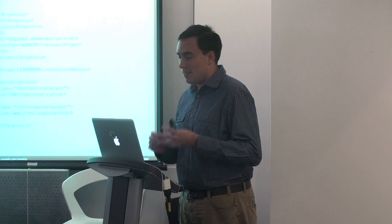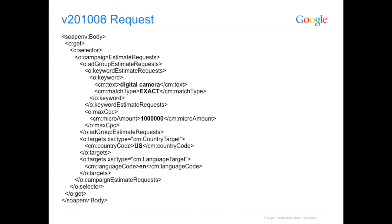How this has changed in v2108 is not too radical. You'll see it has essentially the same structure: a series of campaign estimate requests, ad group requests, and keyword requests nested inside each other, providing contextual information. The same keyword data is there, you have the micro-amount bid for your ad group, and targeting options like English/United States under your targets inside your campaign request. The actual XML has changed slightly, but the idea is very similar.